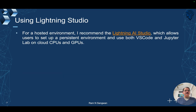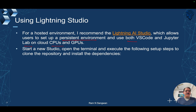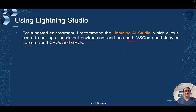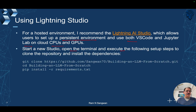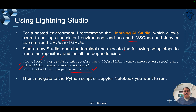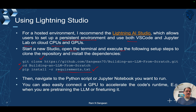You can also use Lightning Studio at lightning.ai, which allows users to set up a persistent environment and use both Visual Studio Code and JupyterLab on cloud GPUs and CPUs. Start a new Studio, open the terminal, clone the repository, navigate to the directory, install the packages from requirements.txt, and then run your Python script or Jupyter notebook. You can also connect a GPU to accelerate code runtime, for example when pre-training or fine-tuning the large language model.